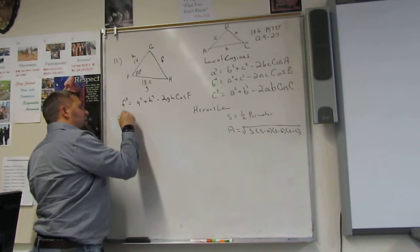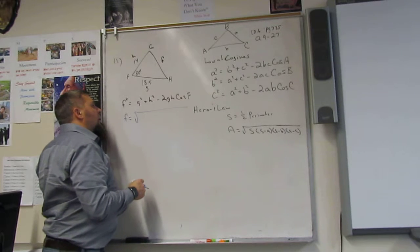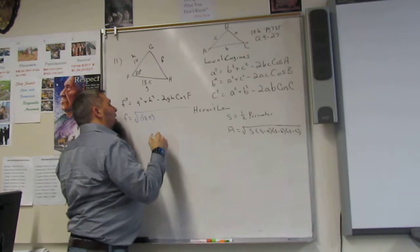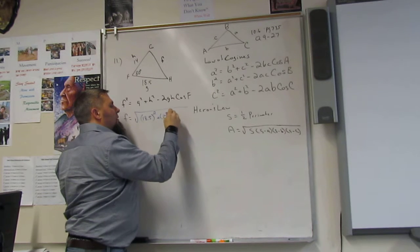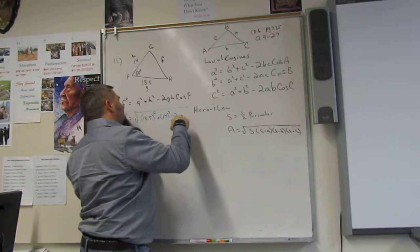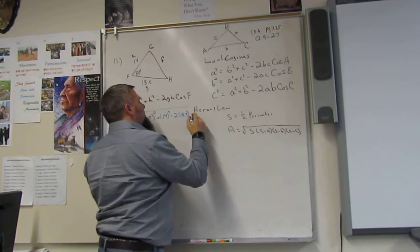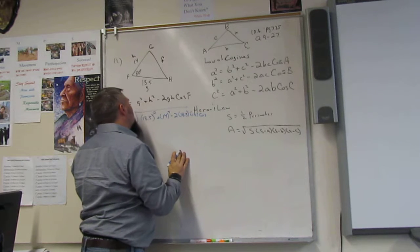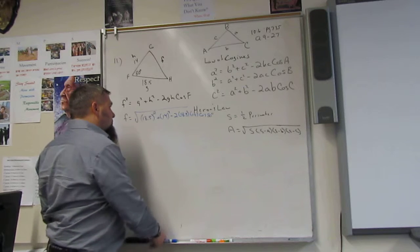Now plug in our numbers. But when we plug in our numbers, we can actually just say little f is equal to the square root of all these numbers. Might as well kill two birds with one stone. So little g is 18.5 squared, and then we have plus h, little h, so 14 squared. And then minus 2gh cosine f. Little g is 18.5, h is 14, and cosine of f is 80 degrees.